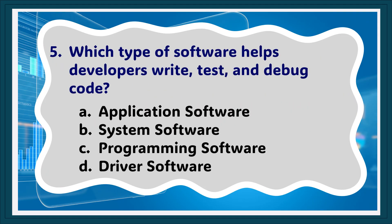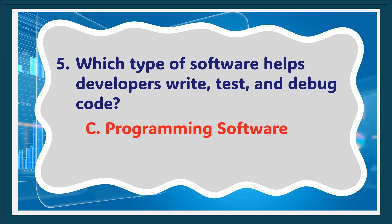Question 5: Which type of software helps developers write, test, and debug code? A. Application software, B. System software, C. Programming software, D. Driver software. The answer is C. Programming software.